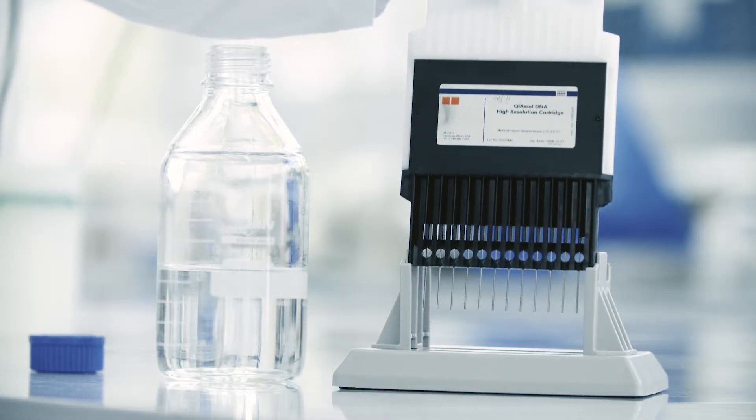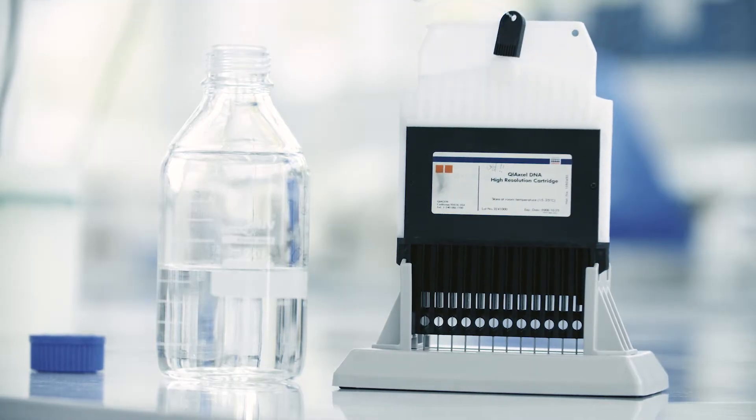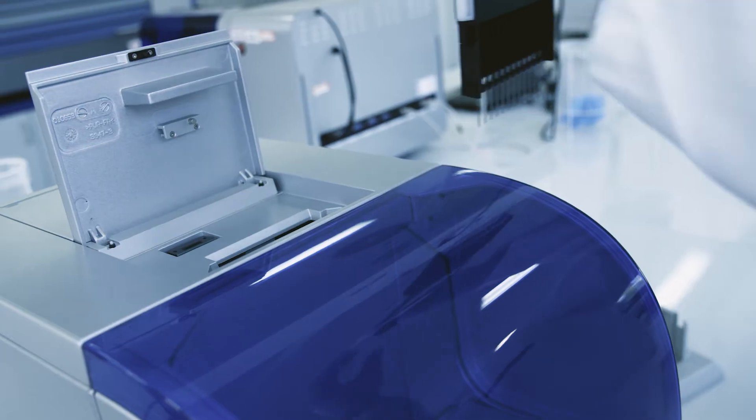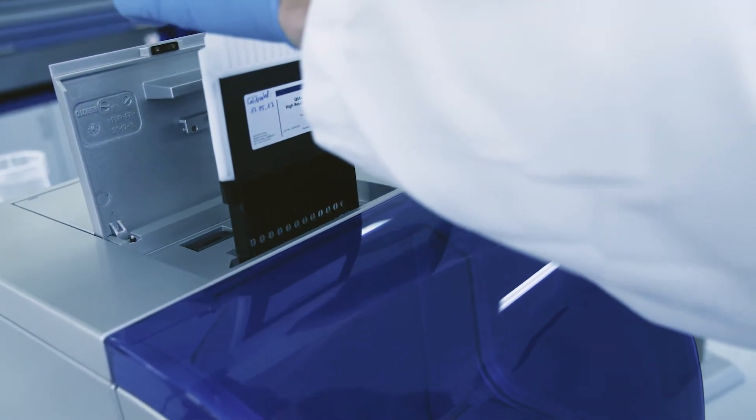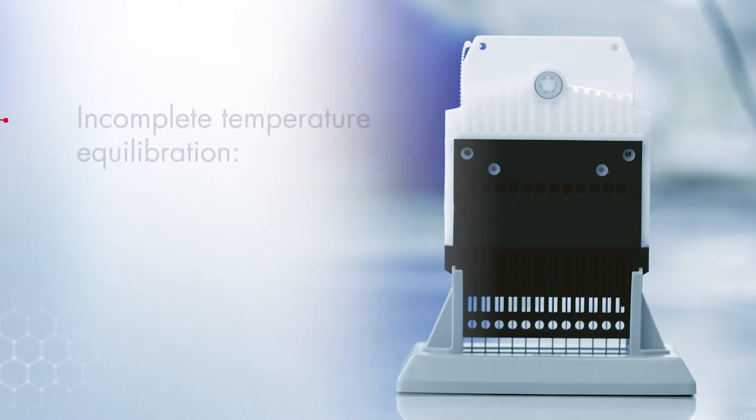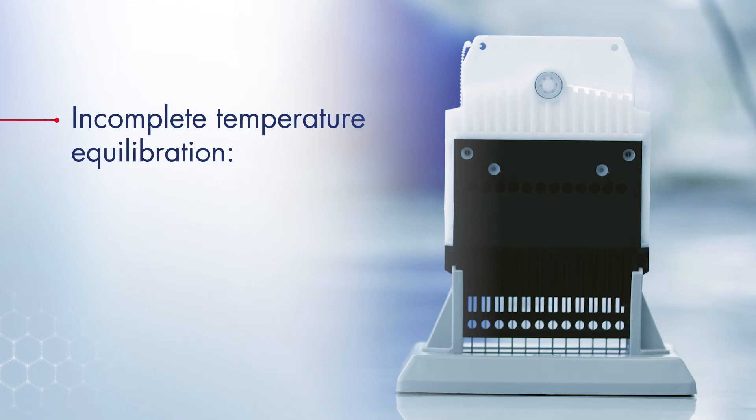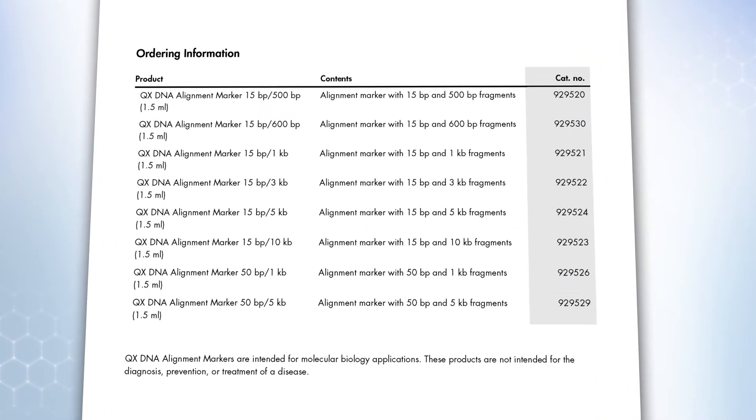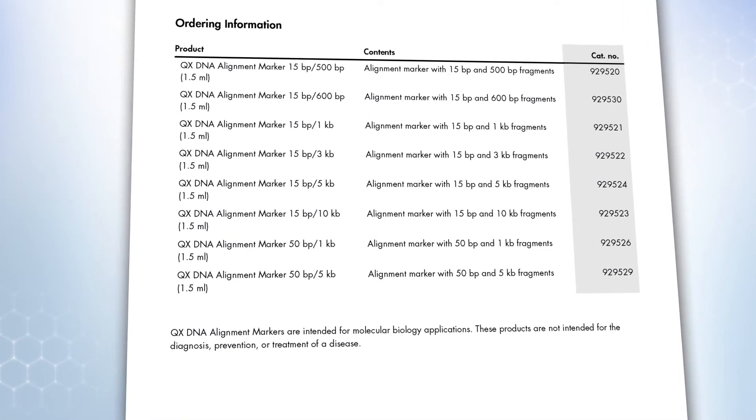To equilibrate the cartridge, either place it into the cartridge stand, including wash buffer overlaid with mineral oil, or directly place the cartridge into the Kaixcel Advanced. Ensure that the buffer tray is loaded and wait. Incomplete temperature equilibration can cause run problems and potentially also lead to instrument damage. Always use the correct cartridge type together with the appropriate buffers and markers.